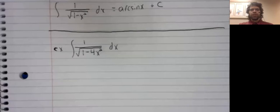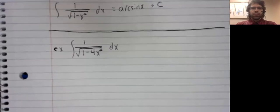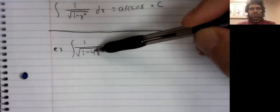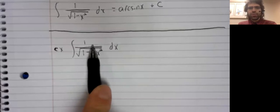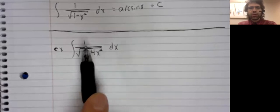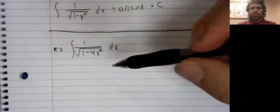Starting with the indefinite integral of one divided by the square root of one minus four x squared. We start by recognizing that this looks really similar to the arc sine formula. If we didn't have that four there, these would be identical. So, how can we get rid of the four?